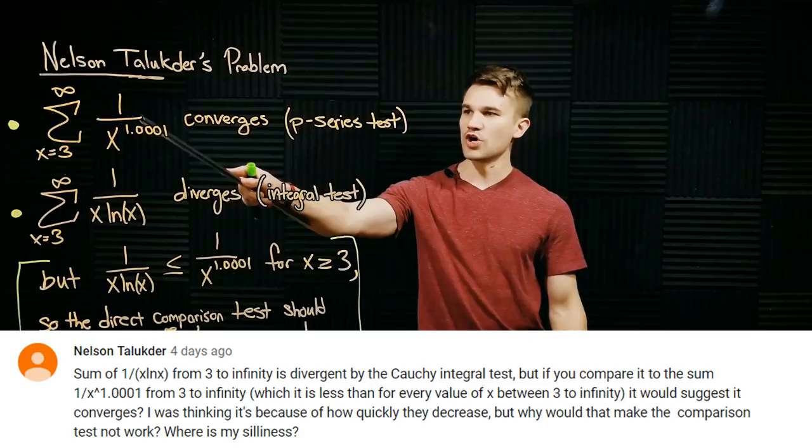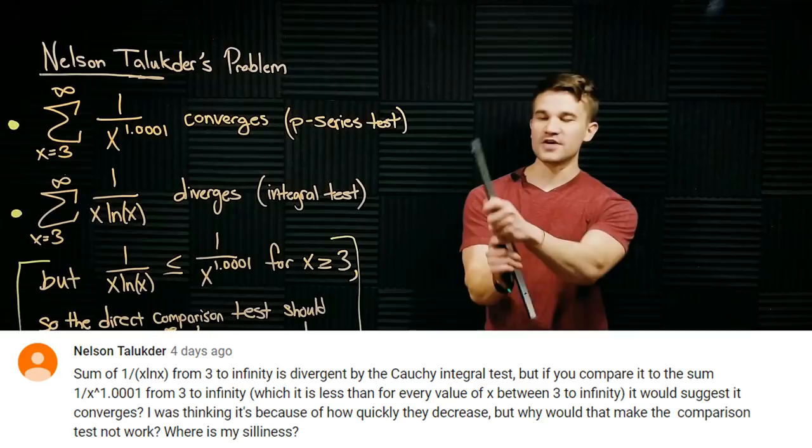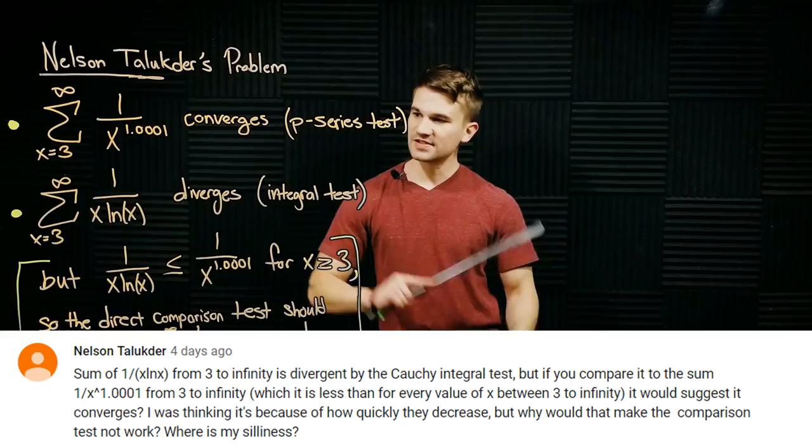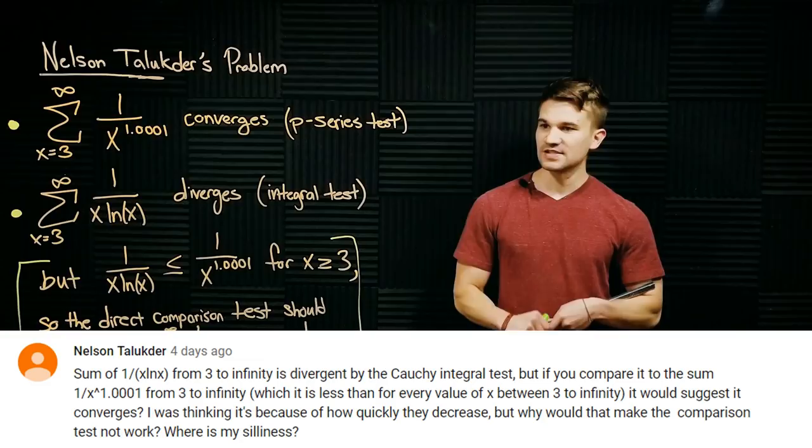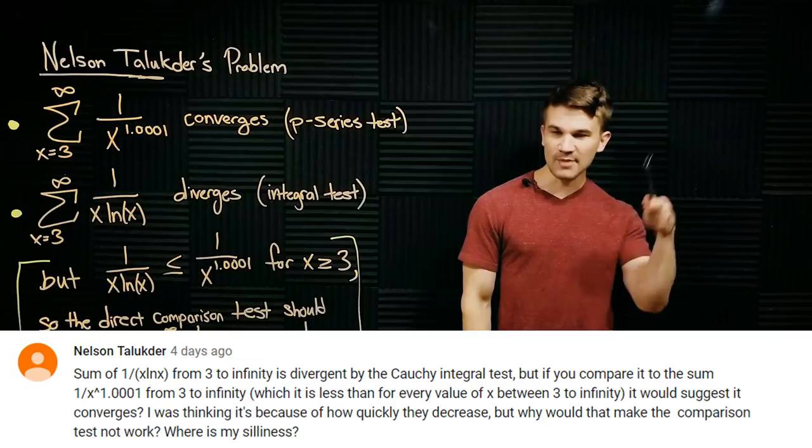This is the question he asked. He says, this series, the sum from three to infinity of one over x to the power of 1.0001 converges. And we can verify that with the p-series test. And he says, on the other hand, this series from x equals three to infinity of one over x times the natural log of x diverges. And you can confirm that with the integral test.